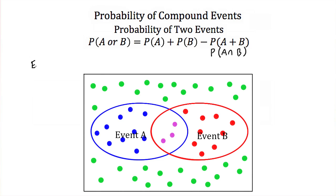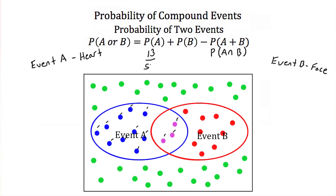So if event A is pulling a heart from a deck of cards, and event B is pulling a face card from a deck of cards, we can find the probability. There are 52 cards in a deck. Event A has 13 cards that satisfy it, so the probability of A is 13 over 52. The probability of event B — pulling a face card — is 12 over 52, since there are 12 face cards. Adding these together gives us 13 over 52 plus 12 over 52, which equals 25 over 52.